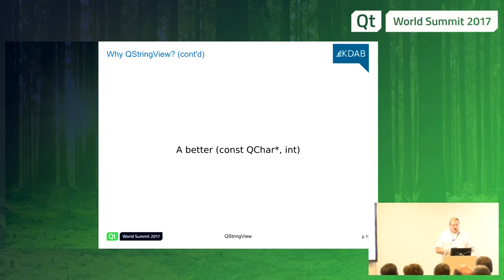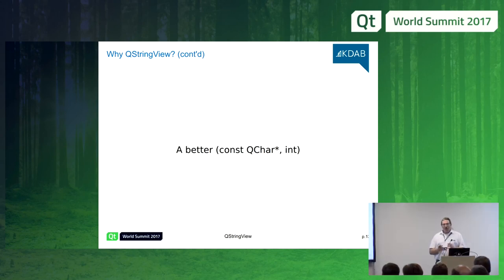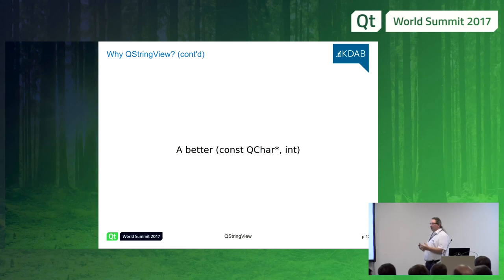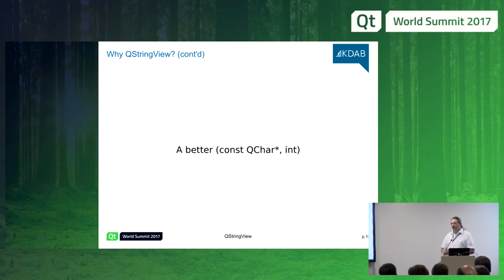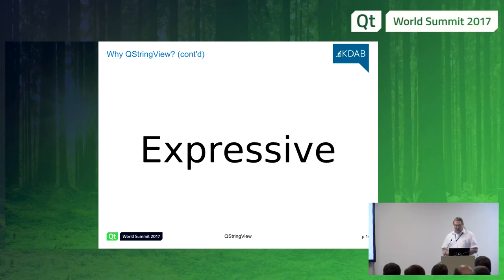Functions taking a pointer and length always have a narrow contract — they have preconditions, and the range needs to be valid. If you take a QStringView instead, you have a wide contract with no preconditions. QStringView also eliminates the need for casting to QChar*. In addition to making mistakes, it's also hard to understand what the int does — in many places you can pass minus one to mean 'determine the length yourself.' What does passing minus four mean?